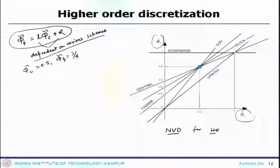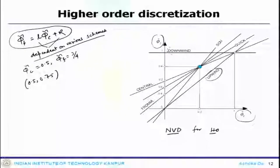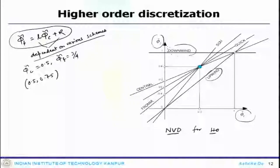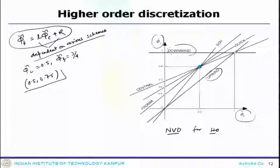All of them actually pass through that point 0.5 and 0.75, except two first order schemes: the upwind scheme and the downwind scheme. These two schemes do not pass through that point. All other higher order schemes like second order and third order schemes pass through that point. In fact, it can also be shown that for a scheme to be second order accurate, it has to pass through this point.